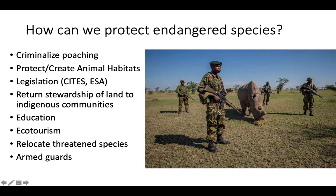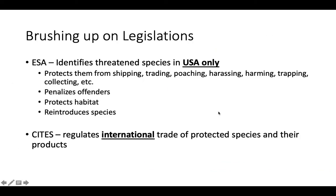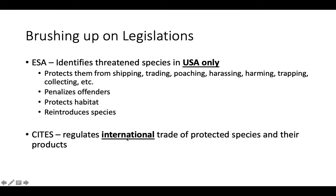Here's the last white rhino being protected with armed guards. The Endangered Species Act protects and identifies endangered species in the U.S. only — whether it's shipping, trading, poaching, harming, or trapping — penalizes offenders, protects their habitats, and sets up reintroduction and breeding programs. Whereas CITES, the Convention on the International Trade of Endangered Species, regulates international trade of exotic species. So one is in the U.S. and one is international.